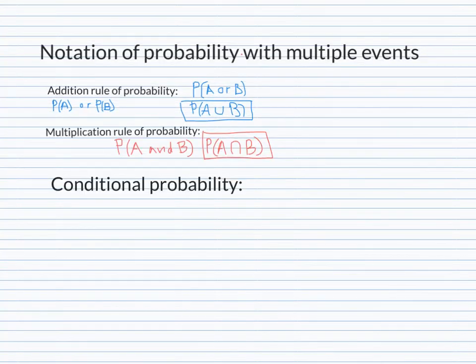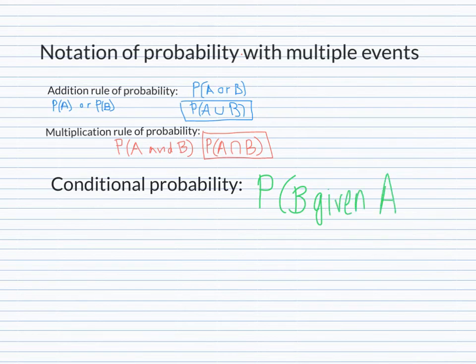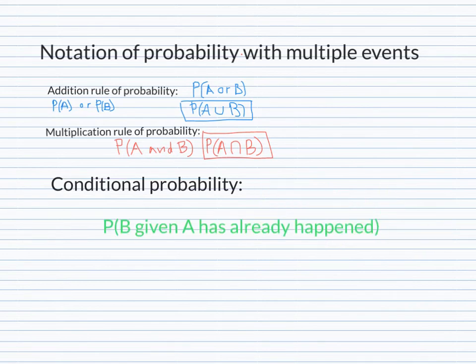The next notation we'll look at is when we have a probability that is conditional probability. That probability looks like this: the probability of B given A has occurred. I wrote that a little bit nicer so that it didn't look so weird. So the probability of B given that A has already happened. The notation for that looks like this: the probability of B. This line means given A has occurred. It has already happened.